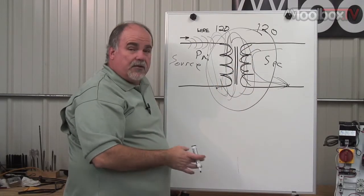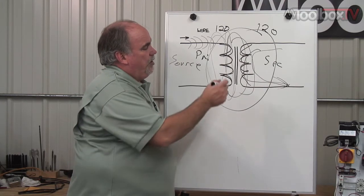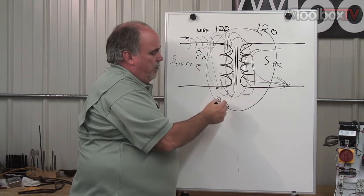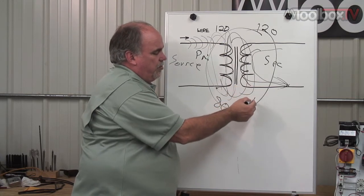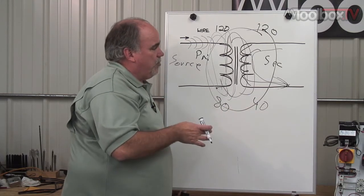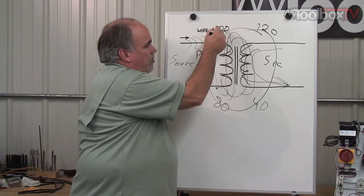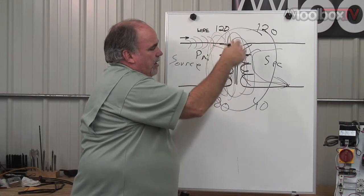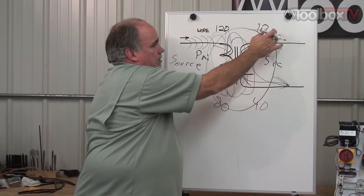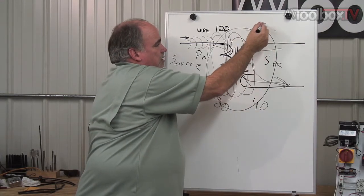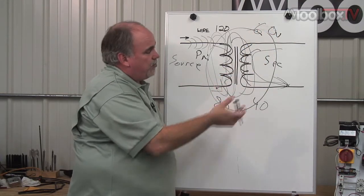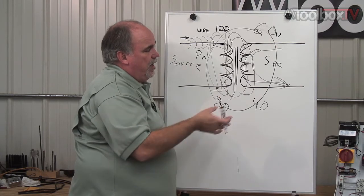If it's a step-down transformer, what you would do is put, let's say you had 80 turns of wire on the primary and only 40 turns on the secondary. That would be a step-down transformer. And what that would do for you is if you put 120 volts in, that magnetic field, passing over 40 turns of wire from 80, would end up giving you only 60 volts. That would be a two-to-one ratio, a step-down transformer.